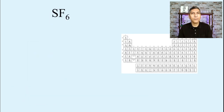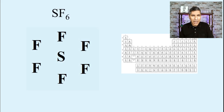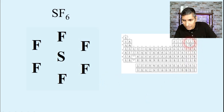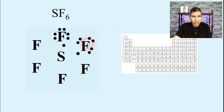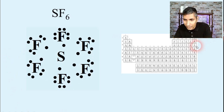Now let's try another example: sulfur hexafluoride. In this molecule, sulfur is the central atom and we have six fluorine atoms arranged around it. Starting from the outside, fluorine has seven valence electrons, so seven dots for every fluorine atom — that's 42 dots total. Next, sulfur has six valence electrons according to the periodic table.